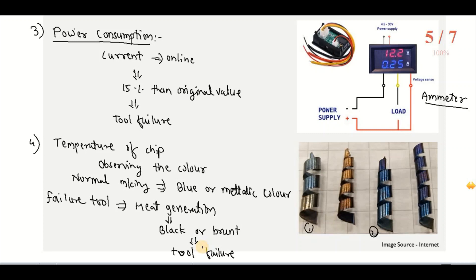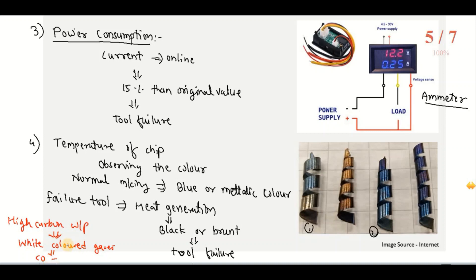Also, during machining of high carbon workpieces with a failed tool, we get white colored gases. This is because the carbon combines with atmospheric oxygen and creates carbon monoxide gases which are white in color. So whenever we are machining a high carbon workpiece with a failed tool and we get white colored gases, we can say that the tool has failed.